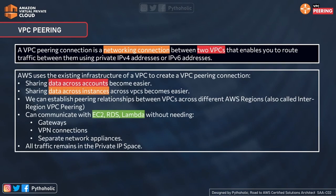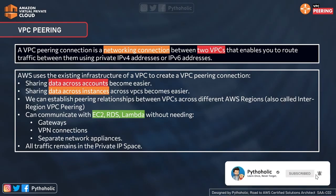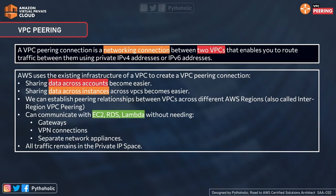Going back to the definition: a VPC peering connection is a network connection between two VPCs that enables you to route traffic between them using private IPv4 or IPv6 addresses. There is no special hardware involved — AWS uses the existing infrastructure of a VPC to create the peering connection, making it easier to share data across accounts and across VPCs. People in the same organization who want to collaborate and use specific resources or applications privately can also make use of VPC peering.